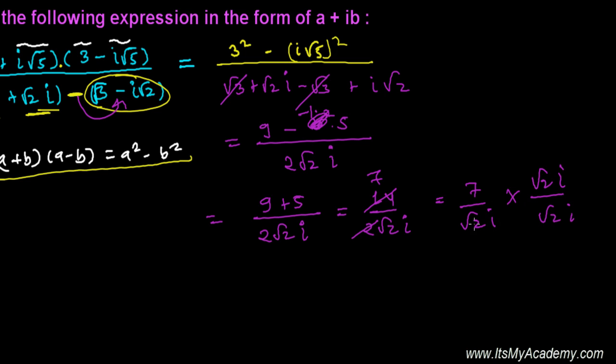So it's 7 times √2i, but √2 times √2 is 2, and i times i is i². In place of i², let's write -1. So you'll get 7√2 over 2i. This is the final answer.